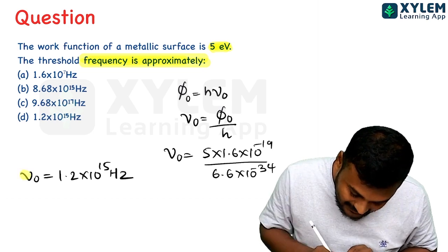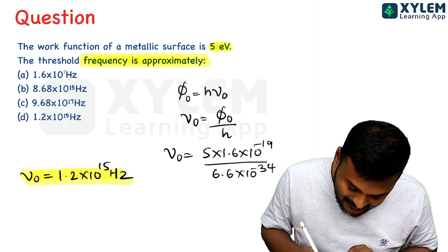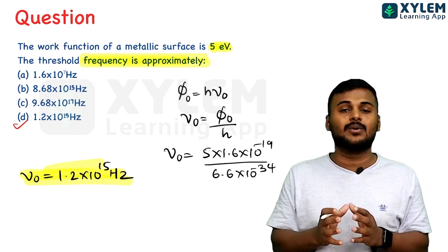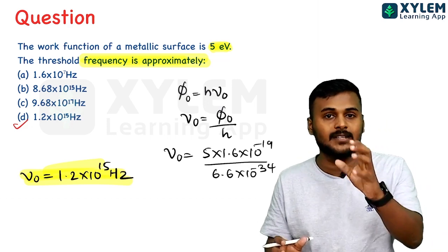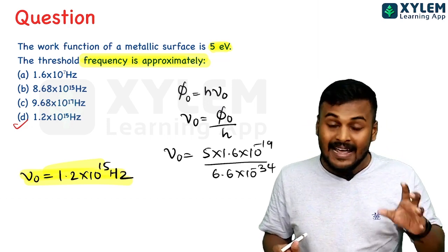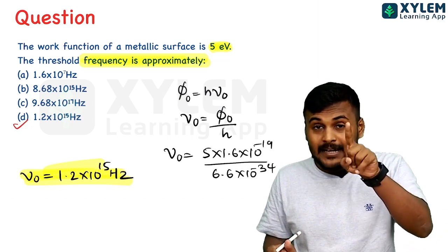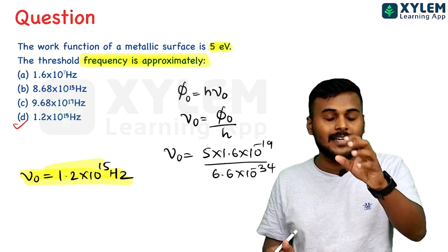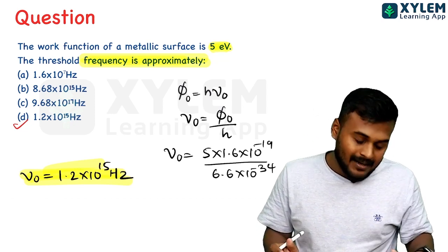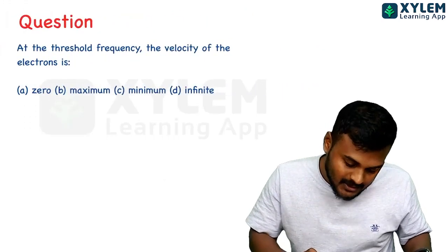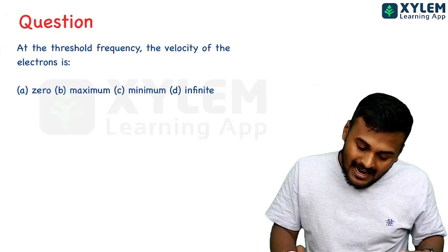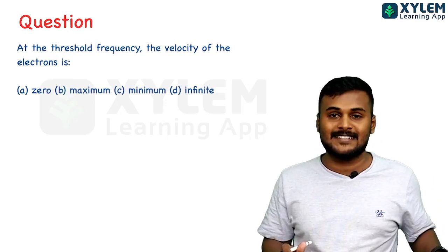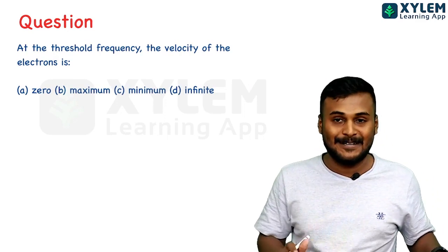So that is option D — the right answer. Directly substitute and find the threshold frequency. Now the next question asks about the velocity of the electron at threshold frequency.